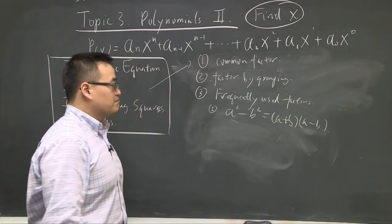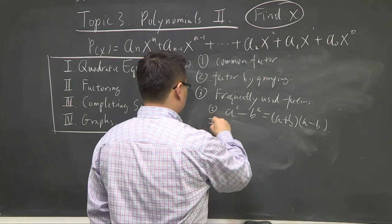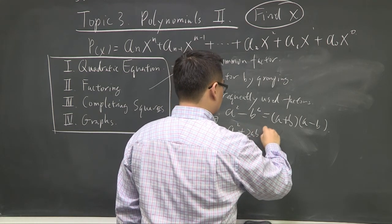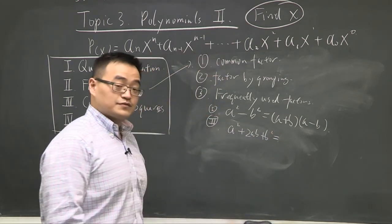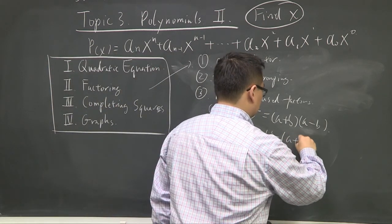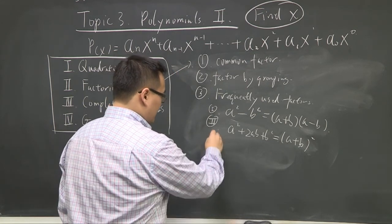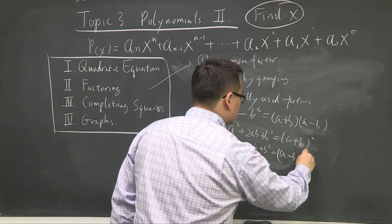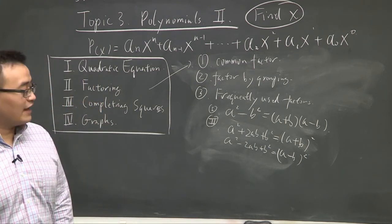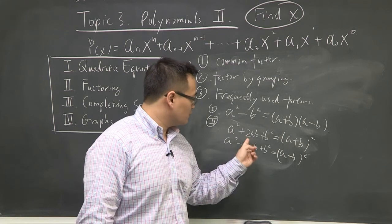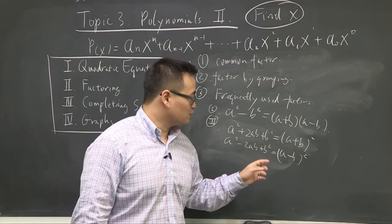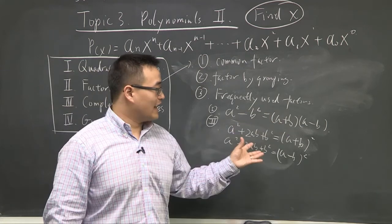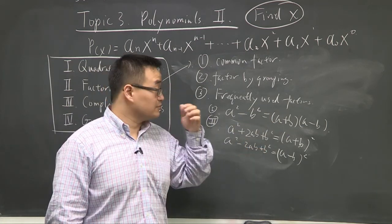Next: perfect squares. If you get a² + 2ab + b², that factors as (a + b)². And a² − 2ab + b² = (a − b)². These are the two options. I know I don't usually tell you to memorize anything, but you have to know how to factor these — they're absolutely crucial. These are the second-degree special forms.